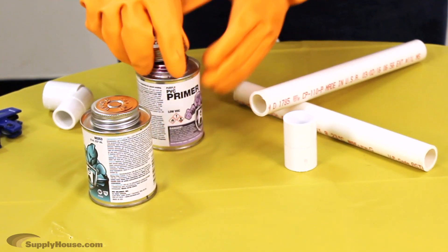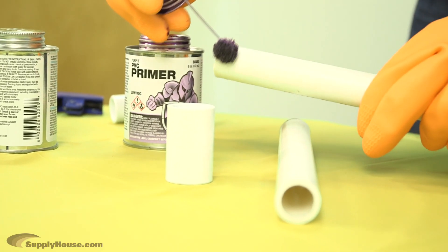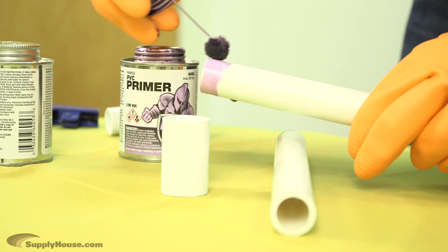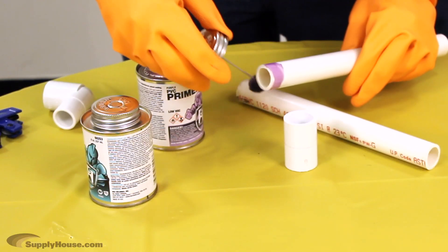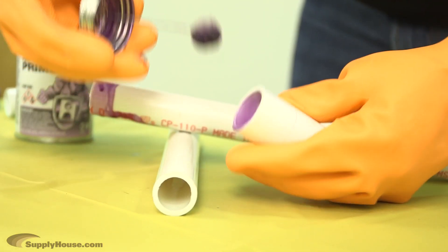The first step is to primer the pipe using PVC primer. This step softens the pipe, removes sheen, and cleans it for a better connection. Primer the outside of the pipe and inside the joint.